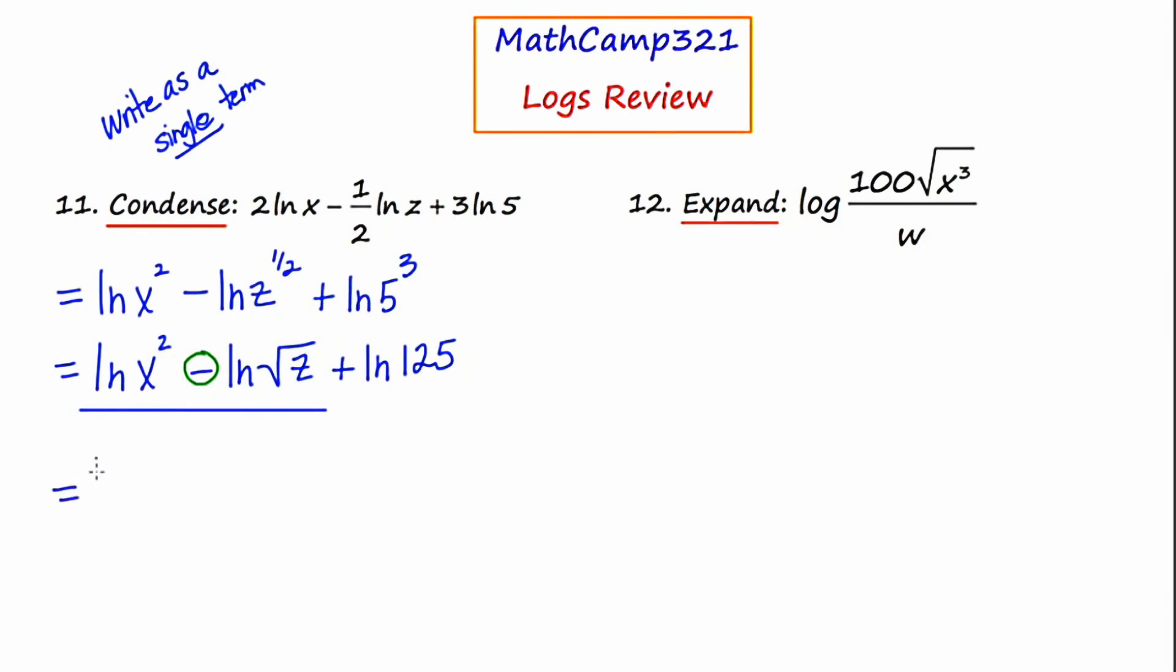I still have the word natural log occurring three times. I'm going to read from left to right and take them two at a time. I notice there is a subtraction in between. A difference of logs comes from a quotient. So I'm going to write the word natural log one time, and my numerator is going to be X squared and my denominator is the square root of Z. Then I'm just going to rewrite this last term, the natural log of 125.